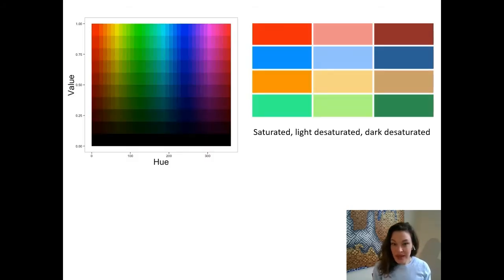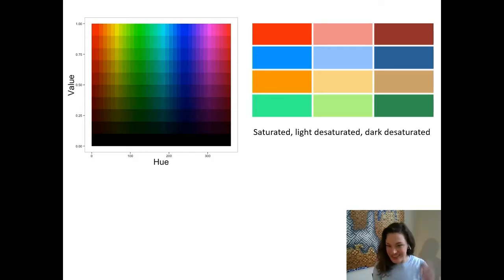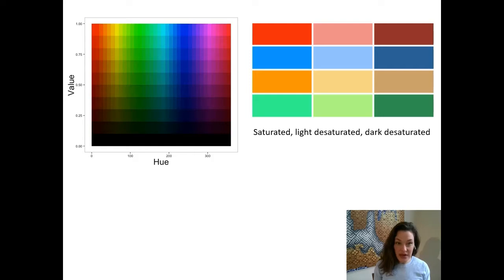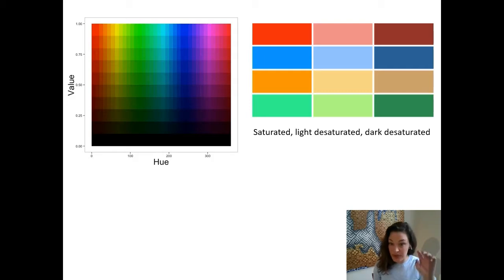Any given color has three different characteristics: value, hue, and saturation. The value of a color refers to how dark or light it is. Looking at the graph on the left, you can see that value is the characteristic going up and down — colors closer to the bottom are darker and ones closer to the top are lighter. This aspect of color is very important to remember: value relates to how light or dark any given color is.